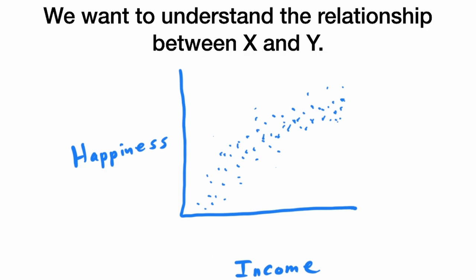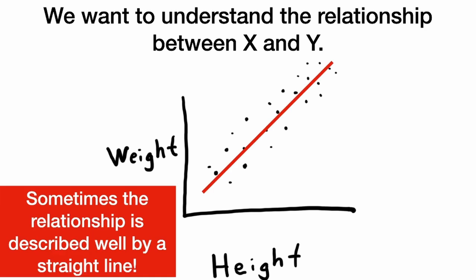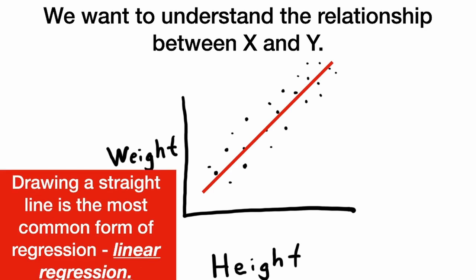We want to understand the relationship between x and y. Sometimes the relationship is curvy. Here we have a logarithmic relationship, and sometimes the relationship is well described by a straight line. Drawing a straight line is the most common form of regression called linear regression.